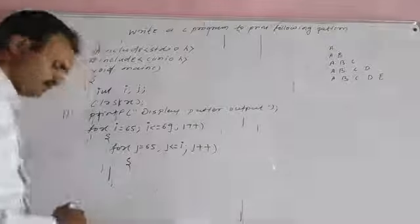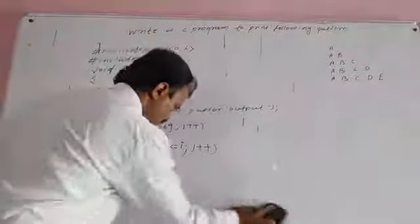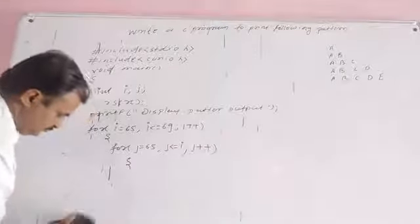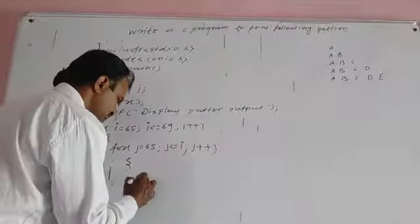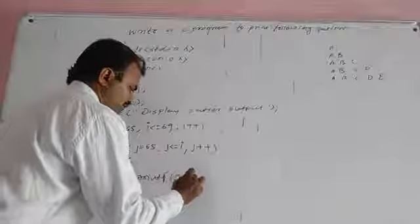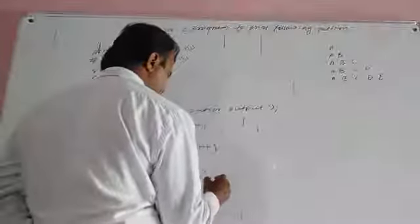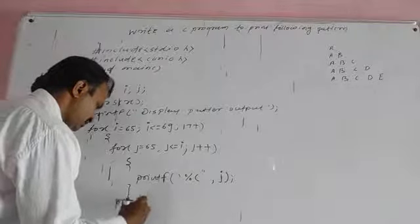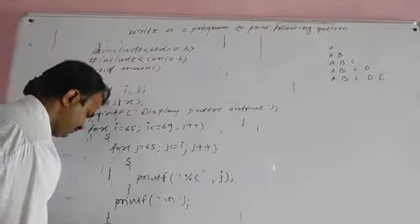Inside the inner loop, use printf with format specifier %c and variable j to print the character. Then use printf with a newline \n after the inner loop. Finally, use getch() and close the program.